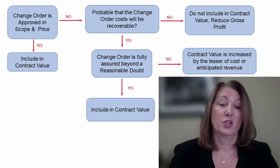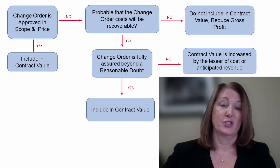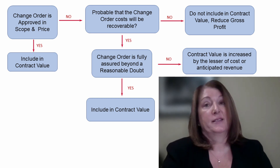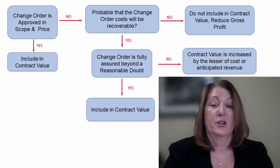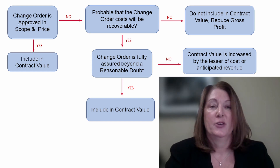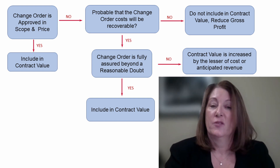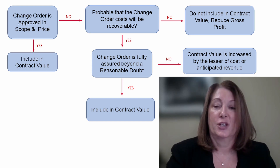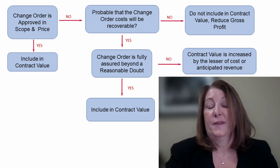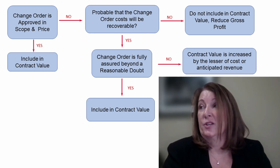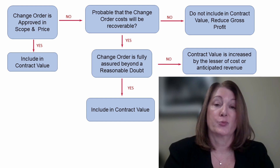Our next step is to determine what value we're going to use to account for this change order. As you'll see in the left-hand corner of the presentation, the first thing you're going to ask is: has the change order scope and price been agreed upon with your customer? If so, your job is simple — you're going to increase your contract value for the change order amount, forecast the estimated cost of this change order, and this will affect your total gross profit on the job. You will recognize gross profit to date based on your percentage of completion calculation.